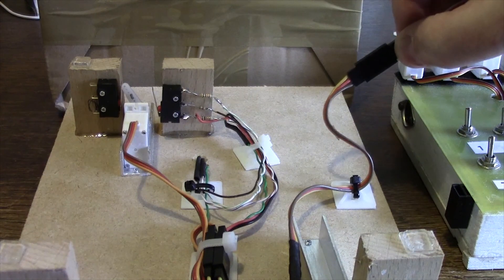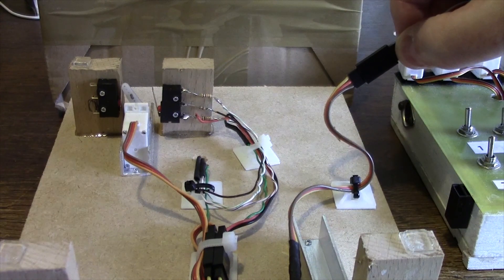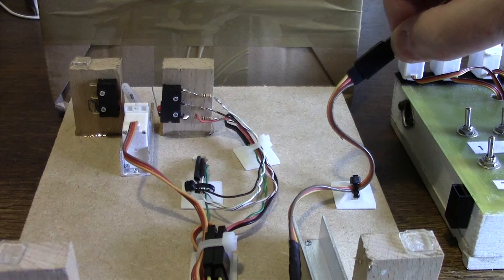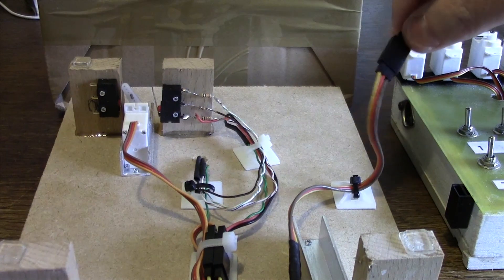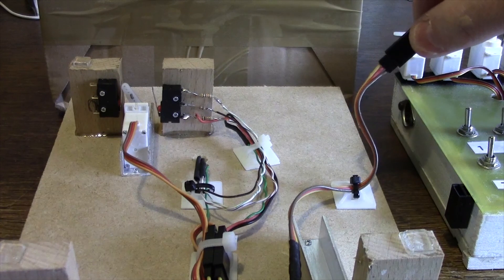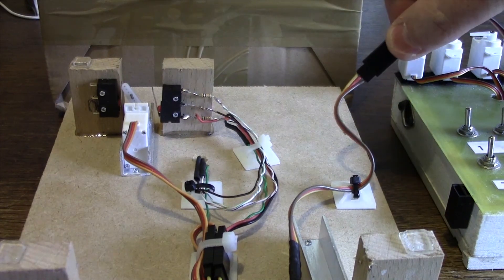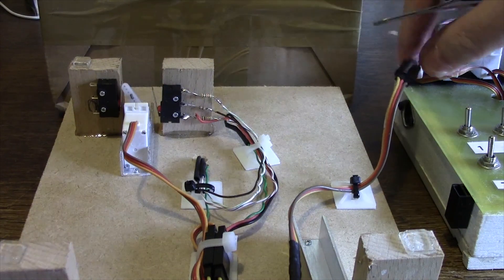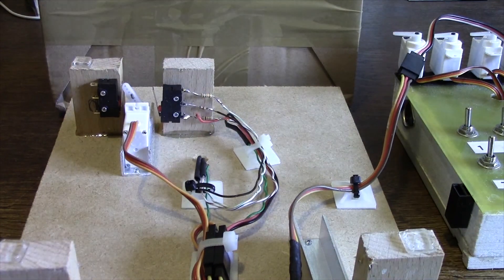Of the three connectors on the servo cable, one is the signal—that's the yellow—the center is red positive, and the black or brown is negative. Servos are driven at five volts, so I calculated my resistor values for five volts and I'm actually taking power from the servo supply. So I'm only using a single cable to drive all of this and do the lighting as well.